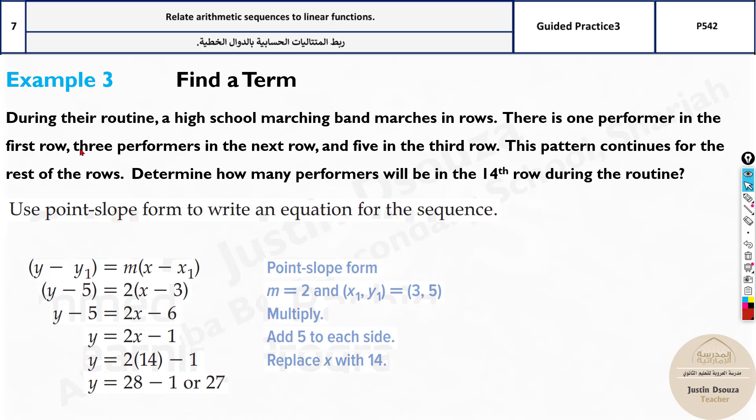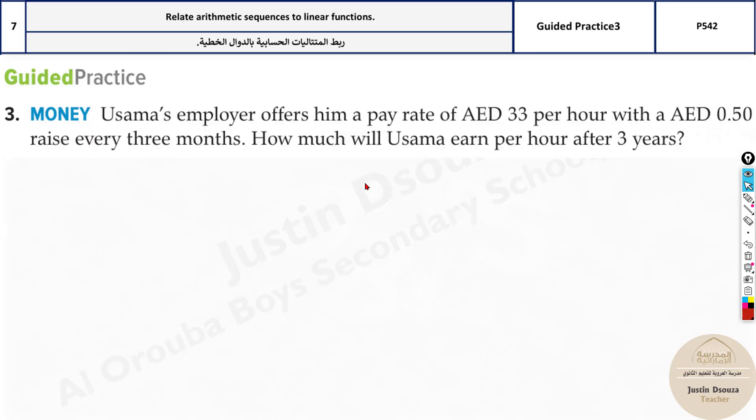But now, look over here. They have clearly mentioned the first row, that is a1, it is 1. A2 is 3, a3 is 5 and so on. What about this one about money?